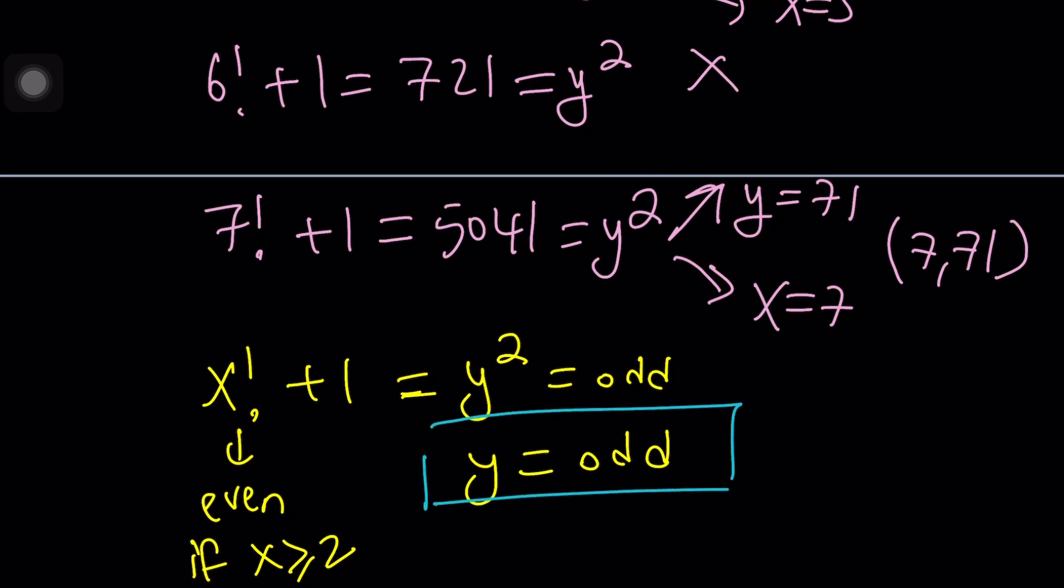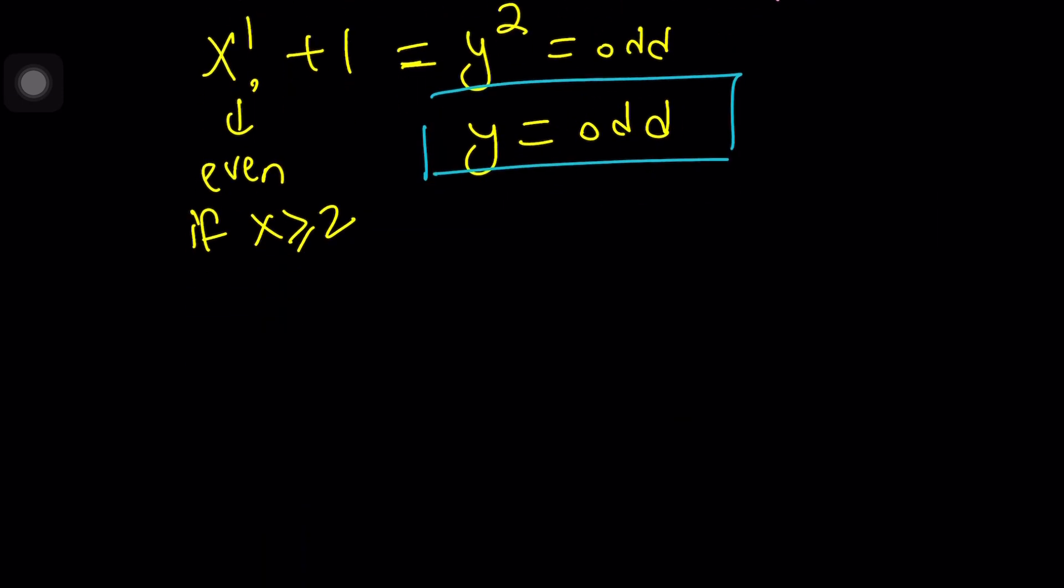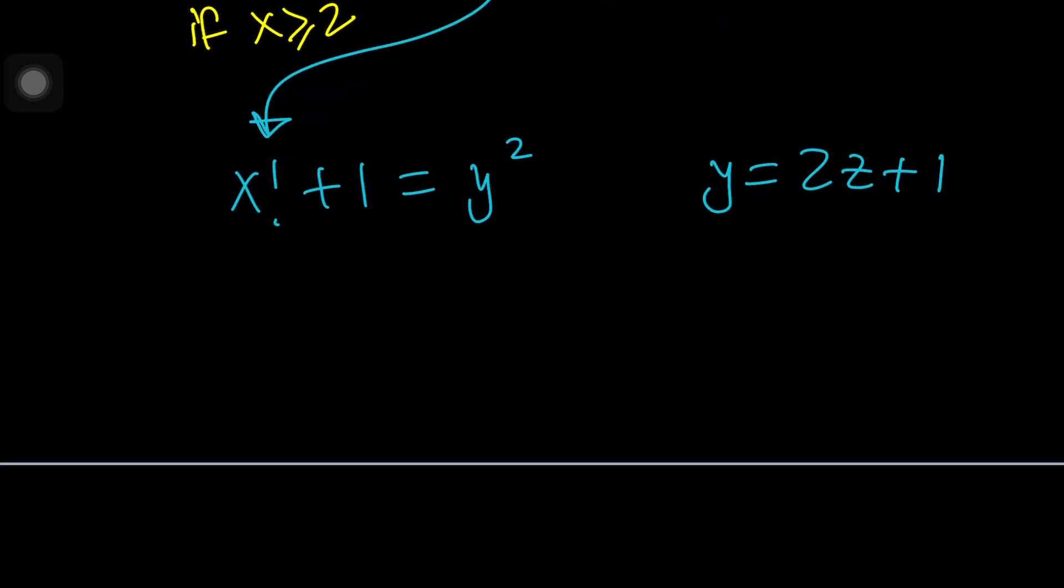If you find more solutions it has to be an odd number. But are there any other solutions? That is the million dollar question. After figuring out y is odd, that's a nice discovery. I realized that since y is odd I can replace y with 2z plus 1.